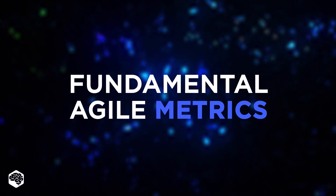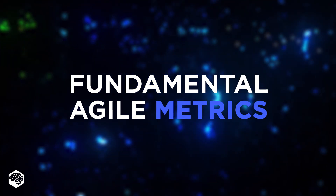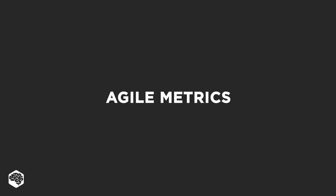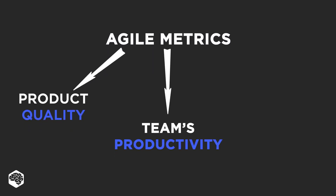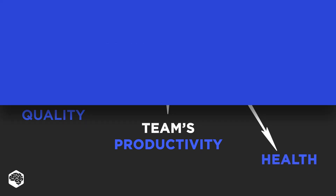Using agile metrics to measure the team's productivity is a key part of agile philosophy. Team managers and all members should see the consequences of their work and use this data to improve workflow and increase efficiency. In this video, we'll review agile metrics that assess the main aspects of the software development process: product quality, team productivity, and health.